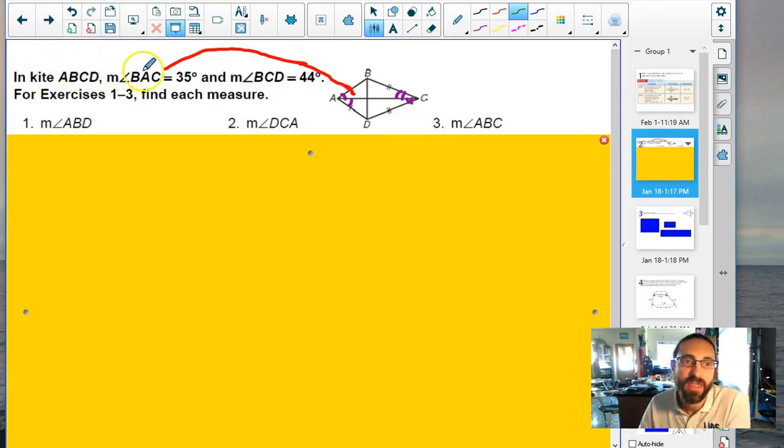It says in kite ABCD the measure of angle BAC is 35 degrees. So I'm talking about this angle right here is 35 degrees. And the measure of BCD, this one here is 44 degrees. So the entire angle here and this one we're talking about a half. If this piece here is 35, this one here is 35. If this entire thing is 44, that means each the top and the bottom are 22. And of course last but not least, all four of those angles are 90 degrees. And that's critical because I said there's eight triangles here and having a 90 degree angle is really important.